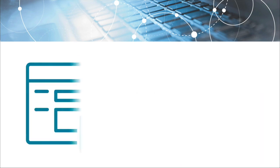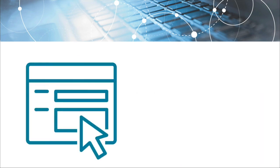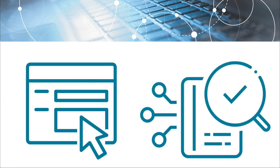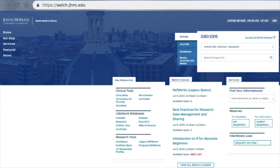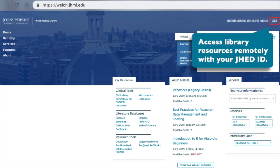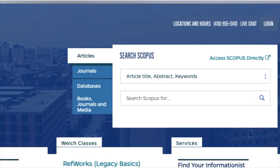You'll also learn how to access databases that are not listed on the library's homepage and how to find guides that will point you to additional subject-specific databases. Even if you're not located physically on the Johns Hopkins campus, you can access the library's databases remotely by logging in with your JHED ID. To do this, click on the login link located at the top right-hand side of the Welch Library homepage.